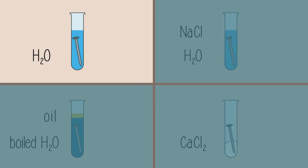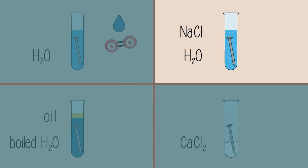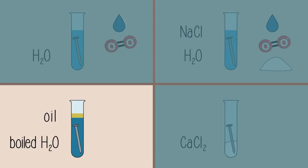So in the first test tube, the nail is exposed to oxygen and moisture. In the second test tube, the nail is exposed to oxygen, moisture, and salt. In the third test tube, the nail is exposed to moisture only.